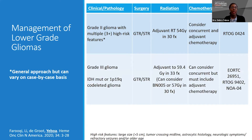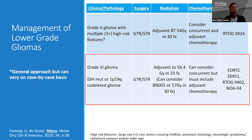For our grade 3 patients, we have a well-established standard of offering adjuvant radiation therapy with treatment doses of 59.4 Gy based on the EORTC and RTOG. At MD Anderson, however, we have our own practice of using simultaneously integrated boosts rather than sequential radiation therapy, treating patients to 57 Gy at 1.9 Gy per fraction. Patients can also be considered for BN005. More commonly for this cohort, the practice is adjuvant radiation therapy with sequential chemotherapy.